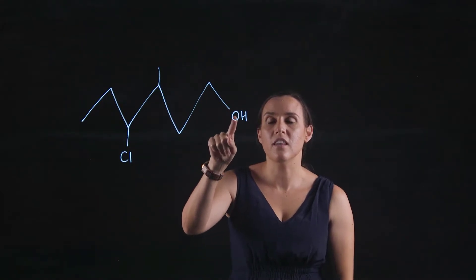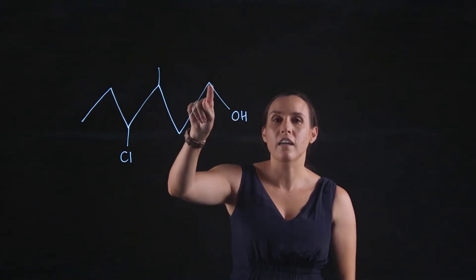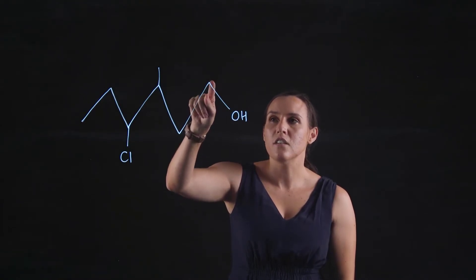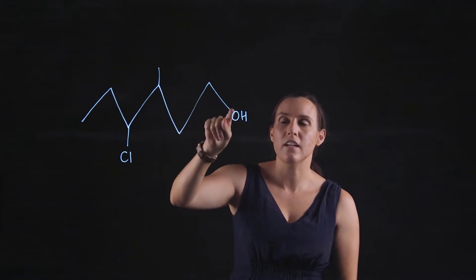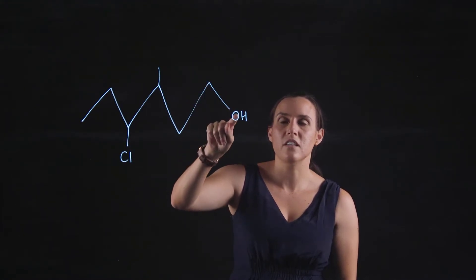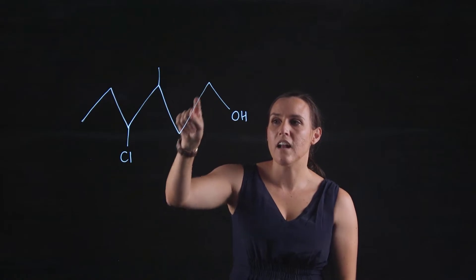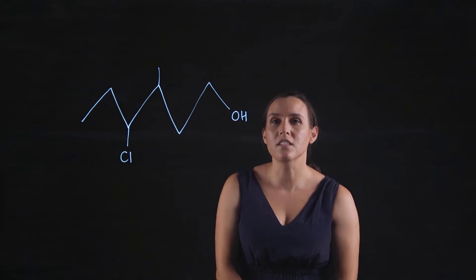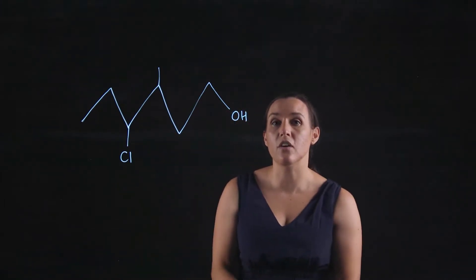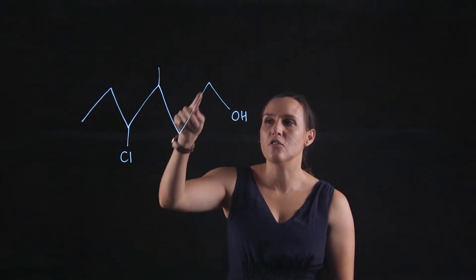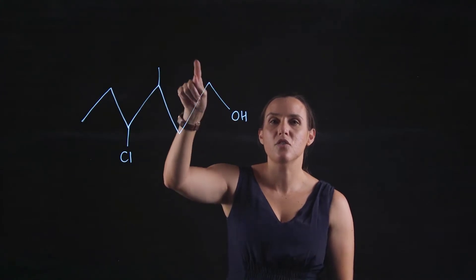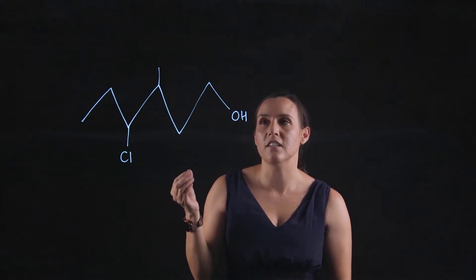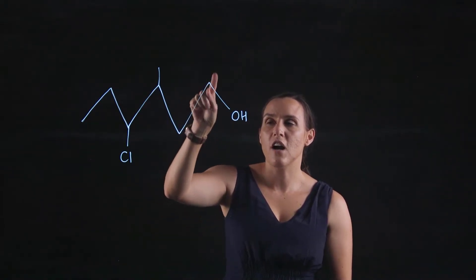Remember when you're looking at the line diagram, the points are carbons and it's got hydrogens attached to it. If I look at this point here, I've got two lines coming out of it — one line going to this OH functional group and another line going to another carbon. Because a carbon will make four bonds and doesn't hold lone pairs, it's going to make four bonds. It's got two bonds coming out of it, so there are another two hydrogens that we're not seeing, represented within this line diagram.